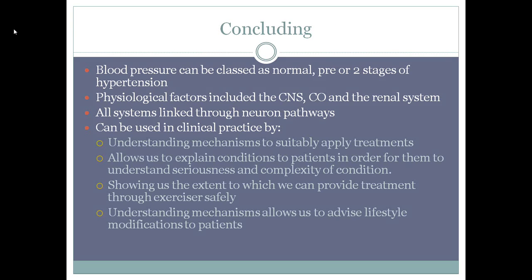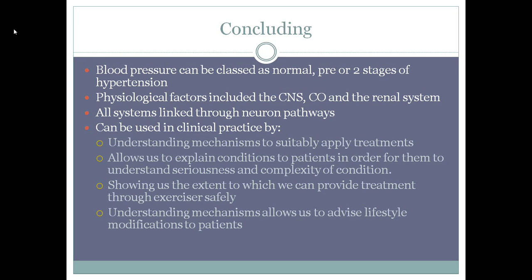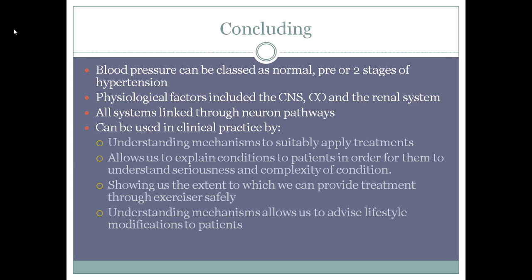In conclusion, blood pressure can be labelled as either normal, pre-hypertension, or either stage 1 or stage 2 hypertension. The physiological factors described — including the CNS, cardiac output, and the renal system — each have their own mechanism, yet are all connected in maintaining blood pressure regulation. This can be seen in the mechanisms of blood pressure control, where the CNS was linked to the baroreceptors, which is a cardiac output function, and both were linked to the renal system through neuronal pathways as seen in the figures.